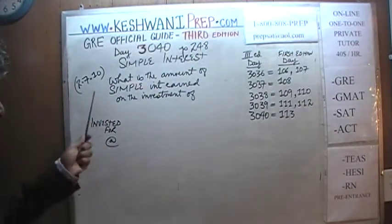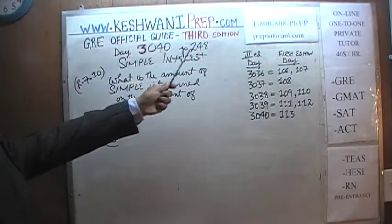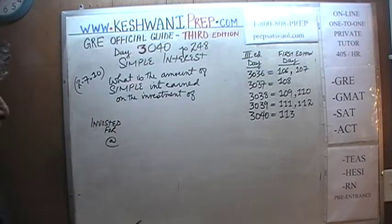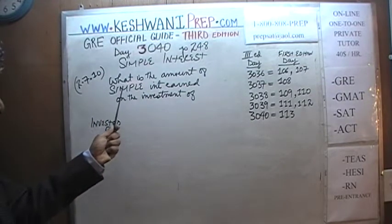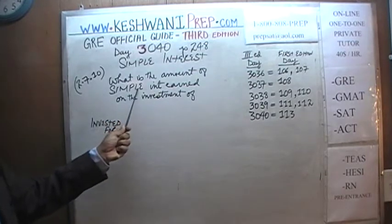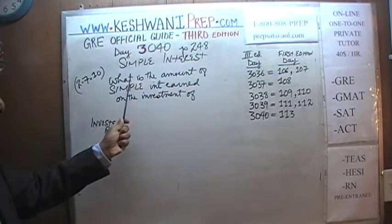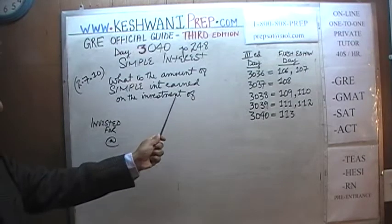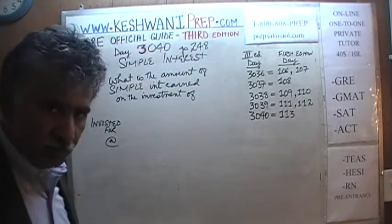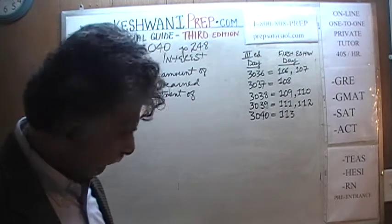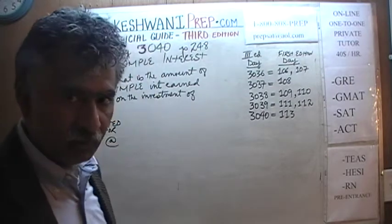The problem we are about to solve is found on page 248, problem number 2.7.10. The question is very simple and straightforward: what is the amount of simple interest earned on the investment of? In the book there is only one problem, but we are going to do four of them.